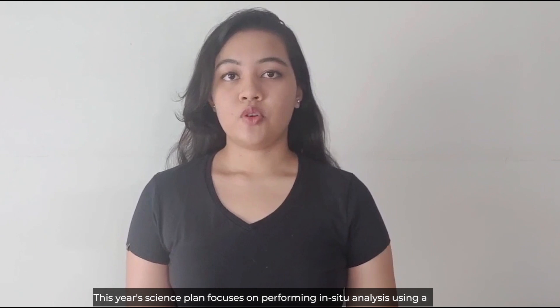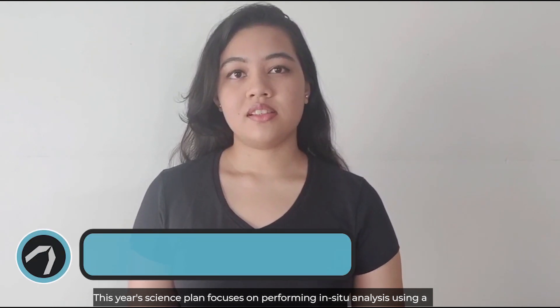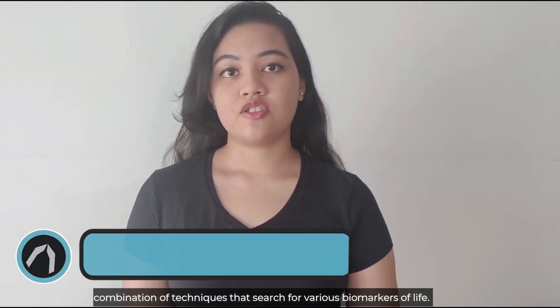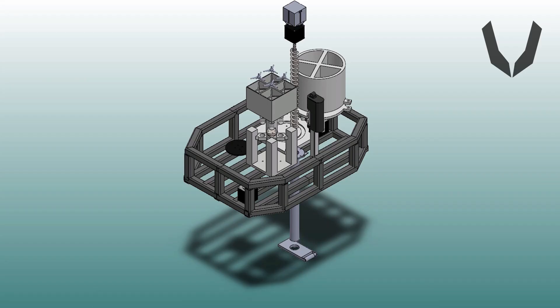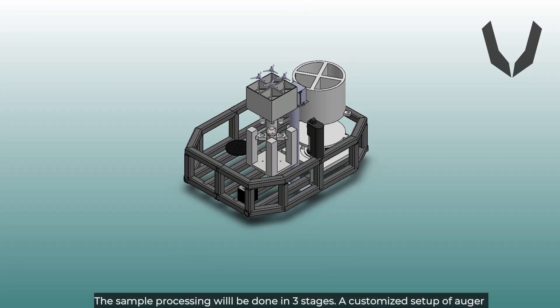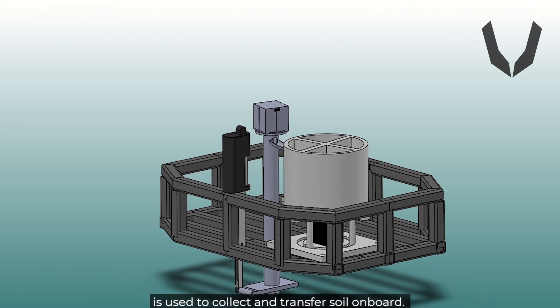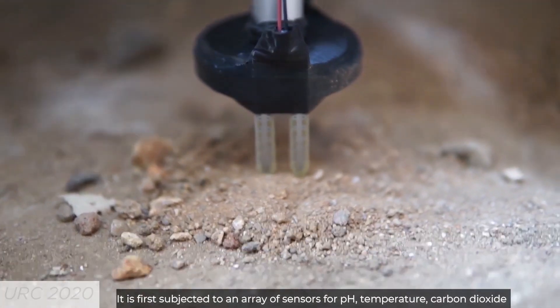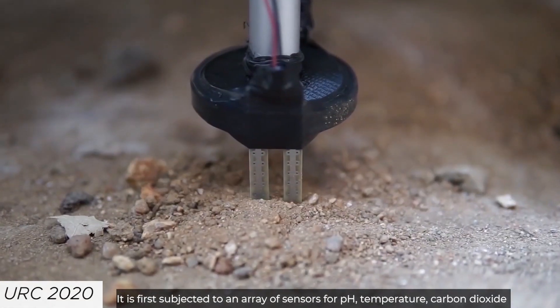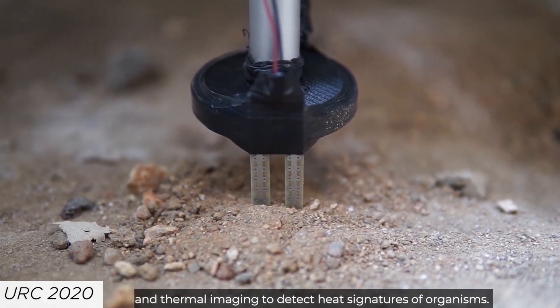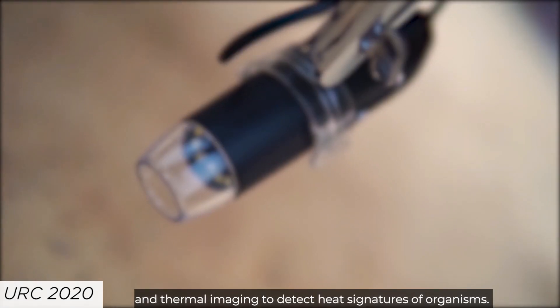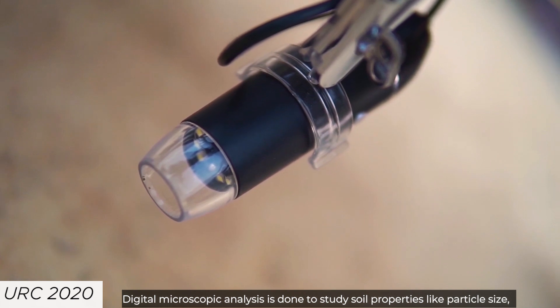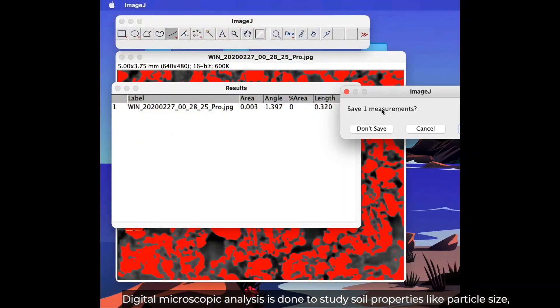This year, the science plan focuses on performing in-situ analysis using a combination of techniques that search for various biomarkers of life. The sample processing will be done in three stages. A customized setup of auger is used to collect and transfer soil on board. It is first subjected to an array of sensors for pH, temperature, carbon dioxide, and thermal imaging to detect heat signatures of organisms. Digital microscopic analysis is done to study soil properties like particle size, texture, and water retention capacity.